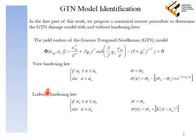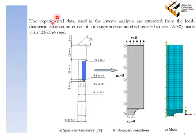The experimental data used in this inverse analysis are extracted from the load-diametric contraction curve of an axisymmetric notched tensile bar test ANT.